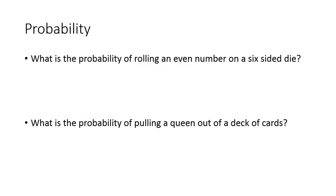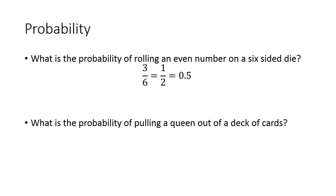Starting off with a quick refresher on what probability is: what is the probability of rolling an even number on a six-sided die? A six-sided die has one through six. There are three even numbers out of six total, which means it would end up being one-half, or 0.5.